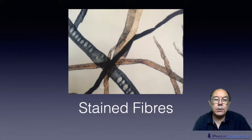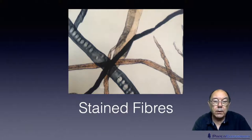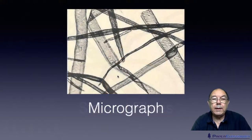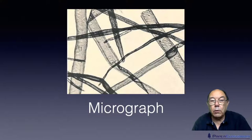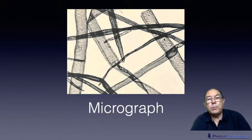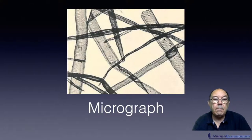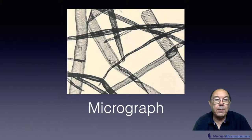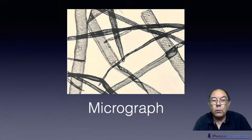Here we can see those cells in a bit more detail. You can see them there and here, and this is a particularly interesting micrograph. On this fibre you can see that there are two rows of these so-called window cells. If you look here, this fibre is as wide as these, so clearly it's another softwood. So there's a softwood fibre, here's a softwood fibre, here's a softwood fibre. On this one you can clearly see the window cells.